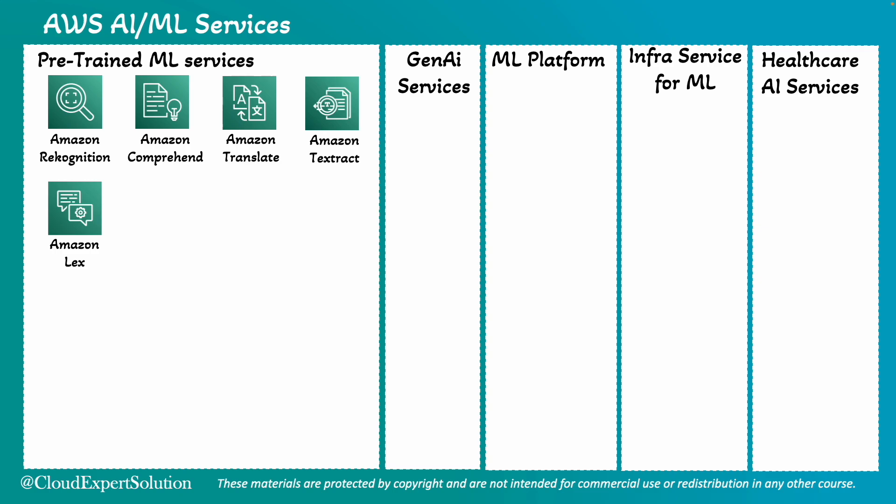A banking app can use Amazon Lex to create a chatbot that helps customers with account inquiries and transactions. Amazon Polly can be used for text-to-speech conversion. An e-learning platform can use Amazon Polly to convert written content into lifelike speech for audiobooks and educational videos.